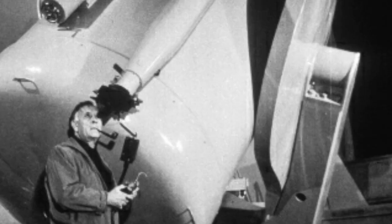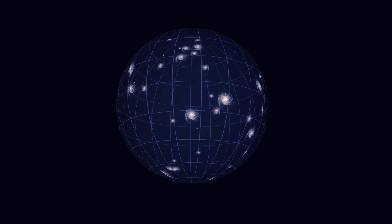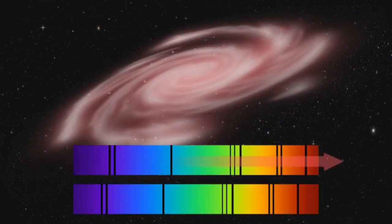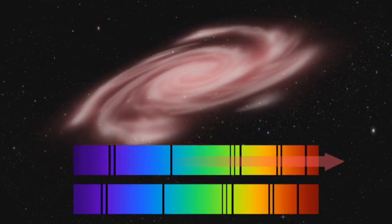As Edwin Hubble realized in the 1920s, the universe is expanding at a constant rate. And so, by measuring the redshift of various galaxies, you can tell how far away they are.